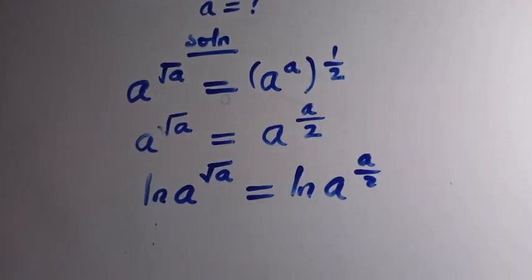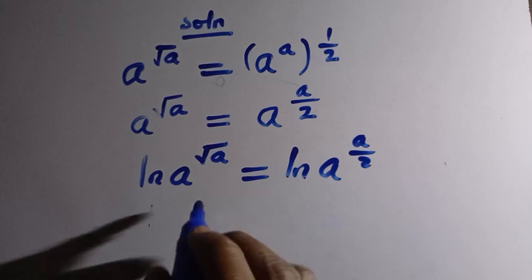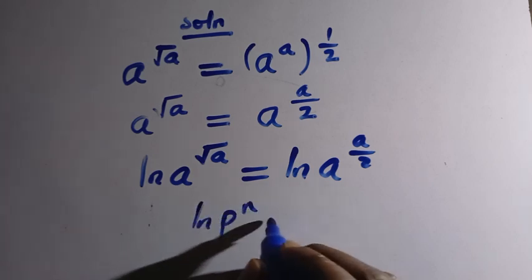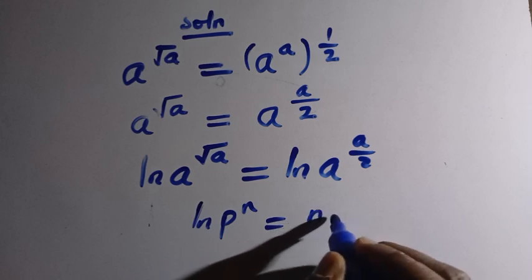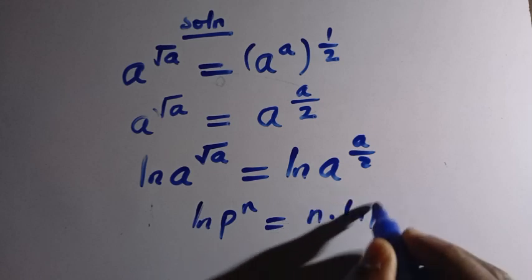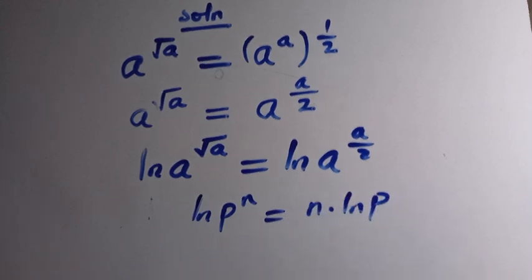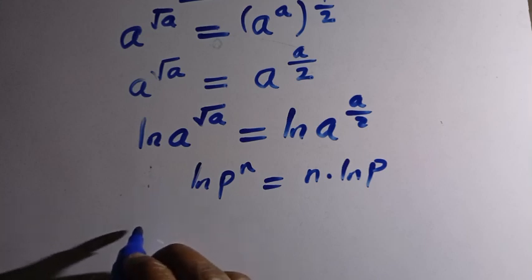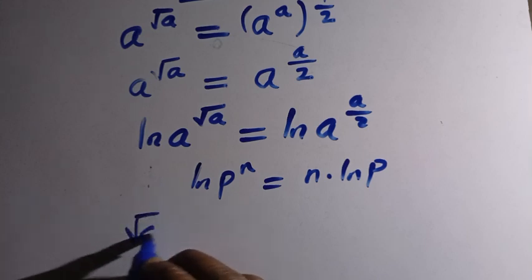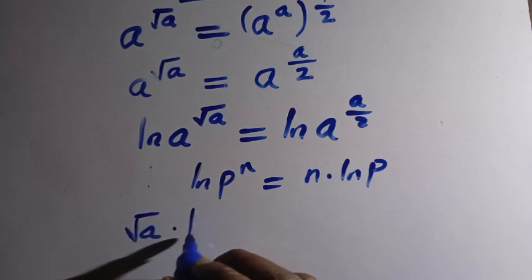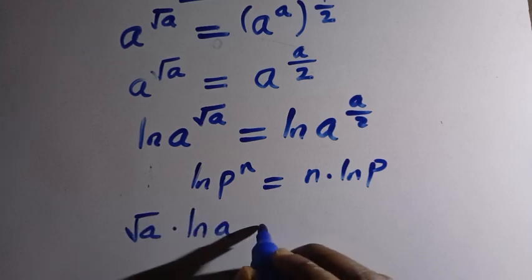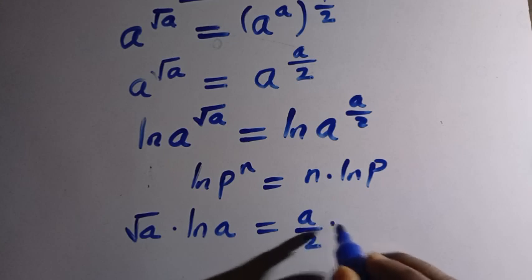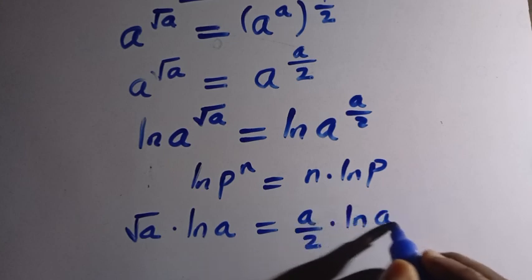By the properties of logarithms, if we have ln of p raised to the power n, this equals n multiplied by ln p. Applying this rule, the equation becomes square root of a multiplied by ln a equals a divided by 2 multiplied by ln a.